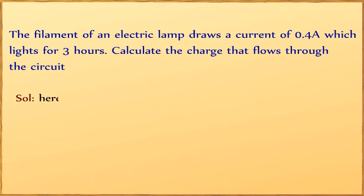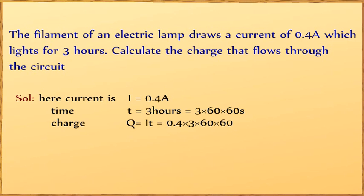Given: current I = 0.4 ampere, time t = 3 hours = 3 × 60 × 60 seconds = 10,800 seconds. Using Q = It, charge Q = 0.4 × 10,800 = 4,320 coulombs.